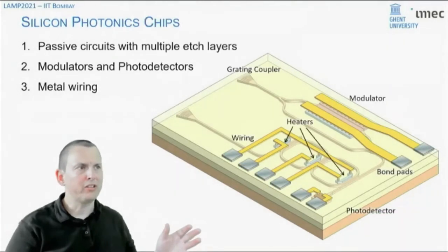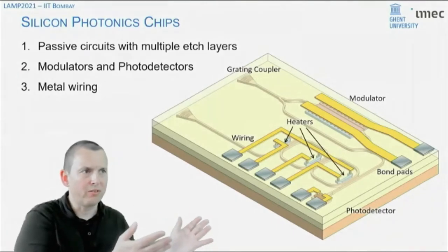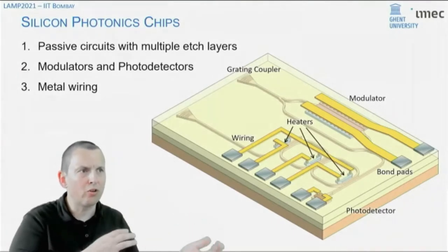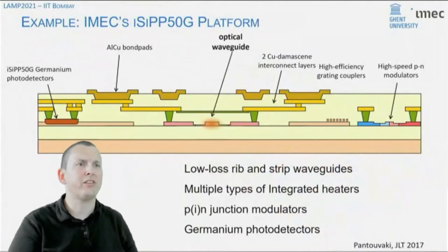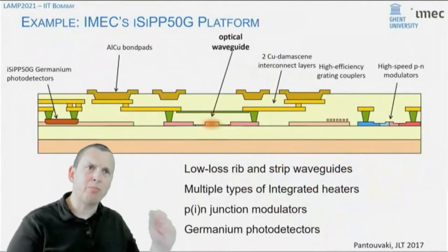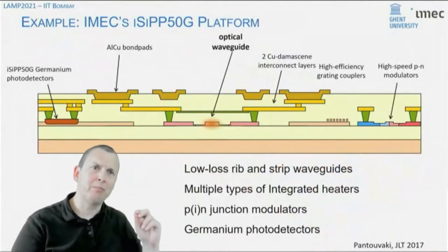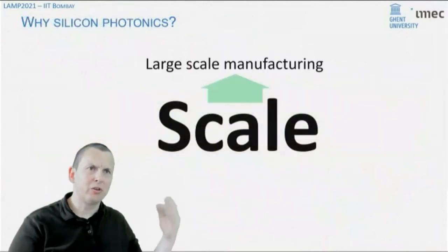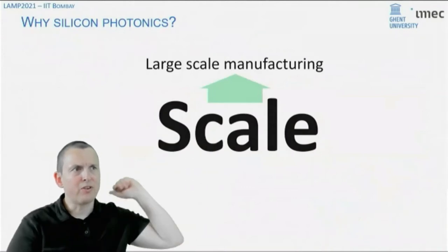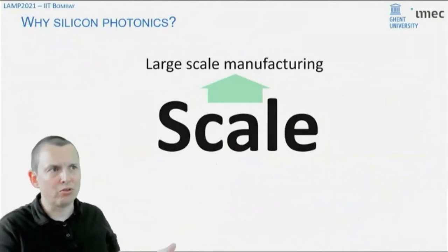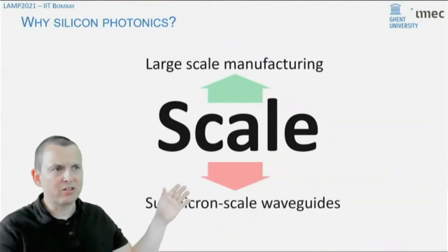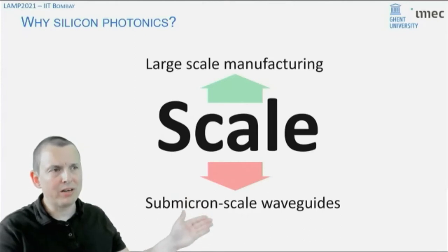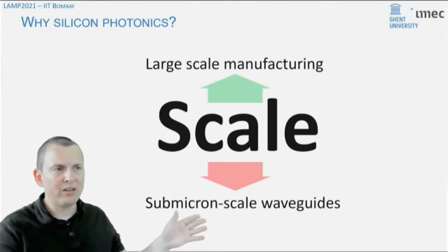Most silicon photonics platforms look very similar to this one. There might be different variations — different levels of metal, different doping schemes — but in the end, it all looks like this in cross-section. This type of process gives you two real important scale advantages. One is, as already mentioned, that this can be fabricated in a CMOS fab, giving you large-scale manufacturing to fabricate these circuits on a massive scale. At the same time, these circuits can consist of sub-micrometer scale waveguides — really, really small waveguides.